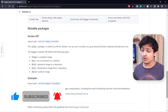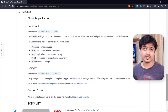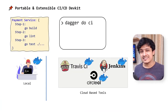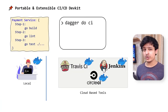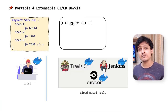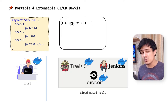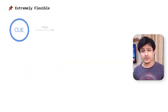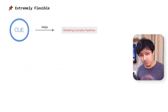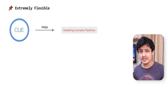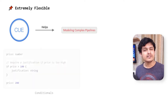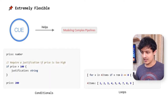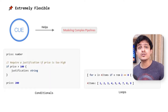Let's move on to the pros and cons of Dagger. Starting with the pros: Dagger is indeed an extremely portable and extensible dev kit. Thanks to CUE, it is so much easier to model complex pipelines in Dagger. Things like conditionals and loops are built right into the language.